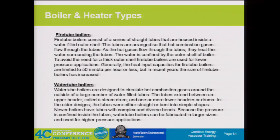So boiler and heater types: the combustion process is driven to support some sort of beneficial function that we need—we're trying to get the heat out of the unit. In general, there are two different types of heat transfer designs: fire tube boilers and water tube boilers. In fire tube boilers, the combustion gases are in the center areas of the heat exchanger, with a water-filled section surrounding these tubes. The heat transfer is from the tube out into the water bath section. These fire tube boilers are generally smaller sizes, and we don't see a whole lot of them.